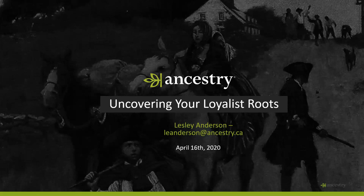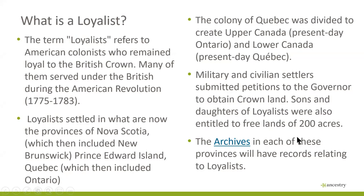Let's start with a little bit of history. When American independence was officially recognized in April 1783, Americans who had remained loyal to the British Crown were persecuted and forced out of their homes. The British government came to the aid of these Loyalists and arranged for transportation to those who wished to leave. Many chose to settle in Nova Scotia, which then included New Brunswick, and in Quebec, which then included Ontario. Following the Constitutional Act of 1791, the colony of Quebec was divided to create Upper Canada — present-day Ontario — and Lower Canada — present-day Quebec. Military and civilian settlers submitted petitions to the governor to obtain crown lands, and sons and daughters of Loyalists were also entitled to free lands.